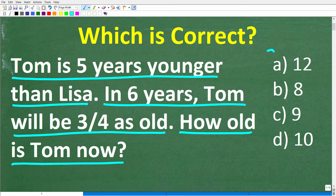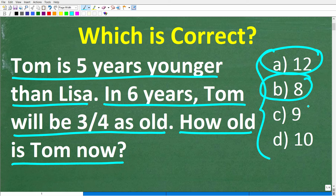We have a multiple choice question here, and all of these numbers are in years. A is 12, B is 8, C is 9, and D is 10. Feel free to use a calculator. Go ahead and put your answer into the comment section. I'll share the correct answer in just one second, and I'm going to walk through step-by-step how to solve this problem.